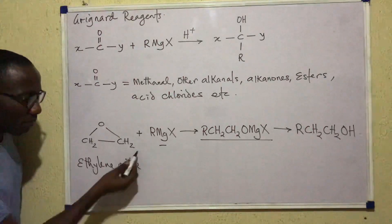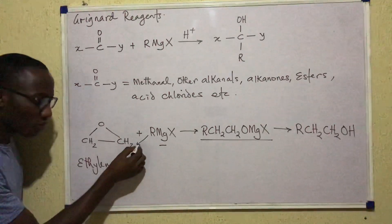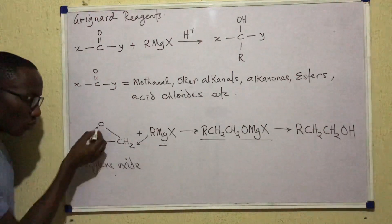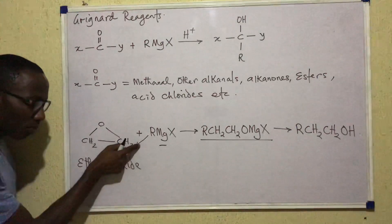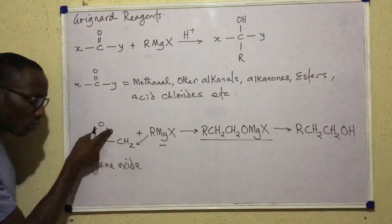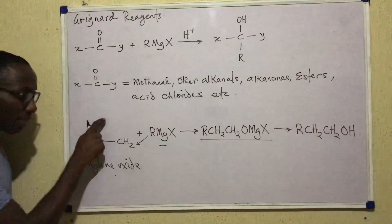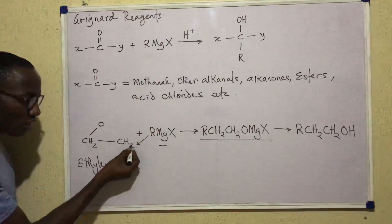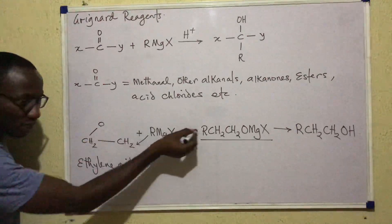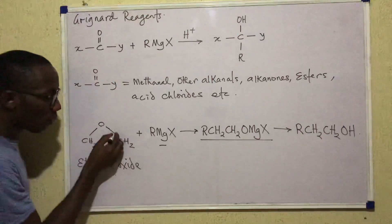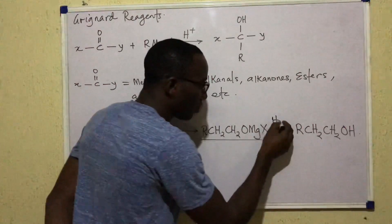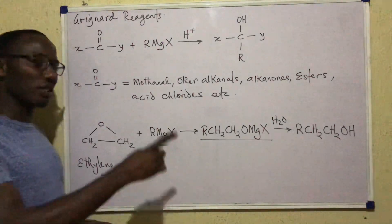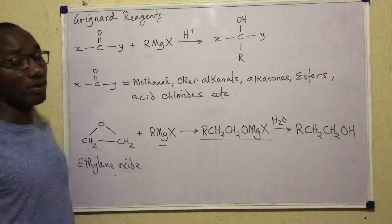When a Grignard reagent reacts with ethylene oxide, we get an intermediate complex. In that complex, R becomes bonded to CH₂, then CH₂-O. As the ring opens, O bonds to MgX, giving us R-CH₂-CH₂-O-MgX. That compound can then be hydrolyzed to give the primary alcohol.